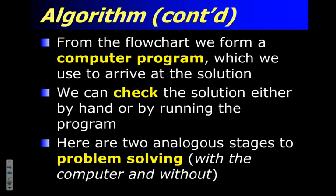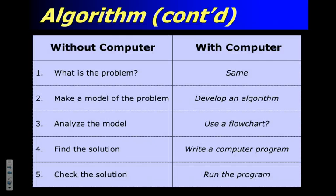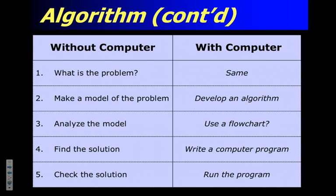If we fit flowcharts into the five problem-solving steps, here's how it works. Step one: define the problem. Step two: make a model — this is where you develop your algorithm and use a flowchart or top-down chart. Then step four: write the actual computer program. We actually did this in our Pong example using the Scratch drag-and-drop environment. Then step five: run it. If it doesn't work, go back and start over.